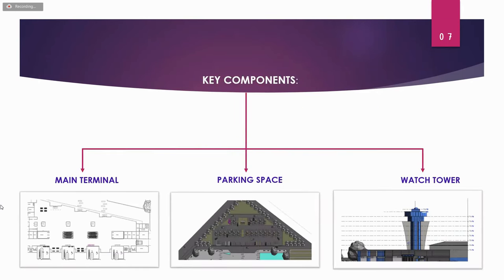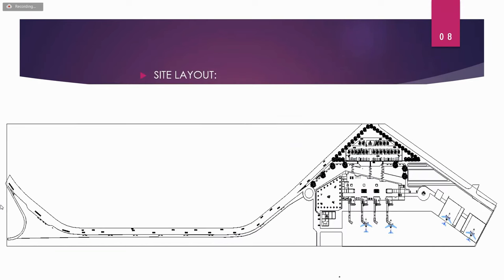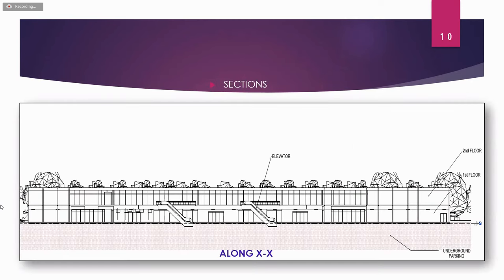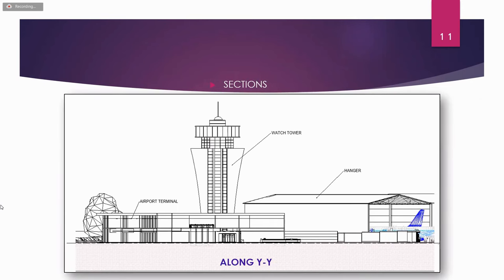The key components of the airport are the main terminal, parking space, and watchtower. The site layout was conceived according to Vastu Shastra and other IS codes. Elevations include the east elevation and north side elevation. Sections are shown along the x-axis and along the y-axis.